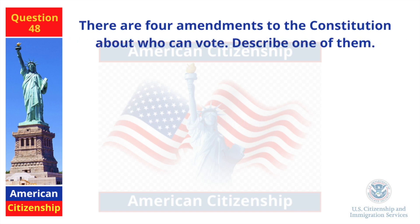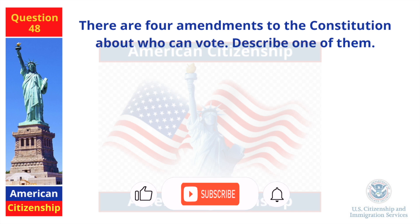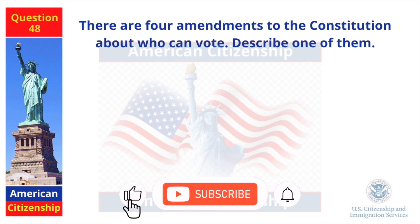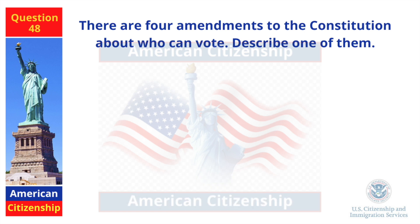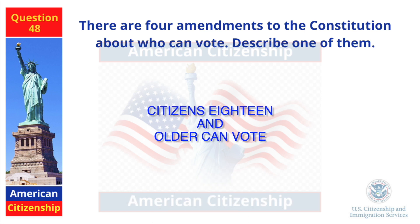There are four amendments to the Constitution about who can vote. Describe one of them. Citizens 18 and older can vote.